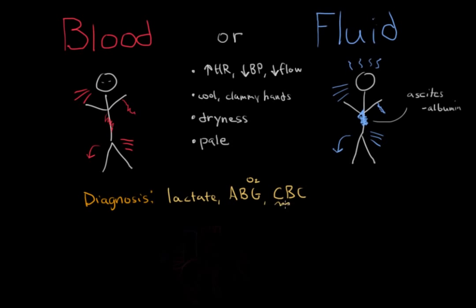So for the CBC, you might see low hemoglobin, or low hematocrit, particularly if blood loss is the cause of hypovolemic shock. Hemoglobin gives you the total amount of hemoglobin. Hematocrit assesses the percent of total red blood cells in the body.